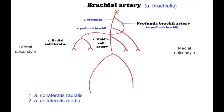The deep brachial artery, arteria profunda brachii. The deep brachial artery gives off an anterior descending branch, which is the radial collateral artery, arteria collateralis radialis, which anastomoses with the radial recurrent artery, arteria recurrens radialis, a branch of the radial artery.